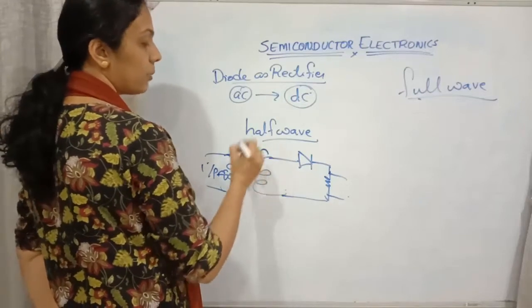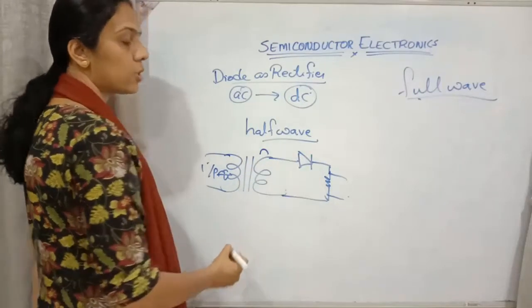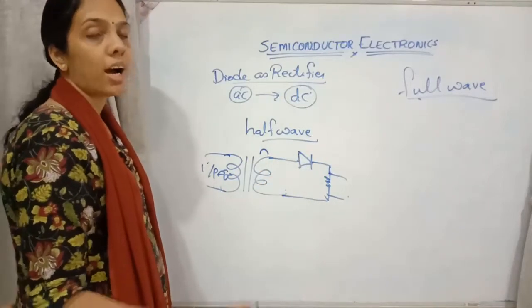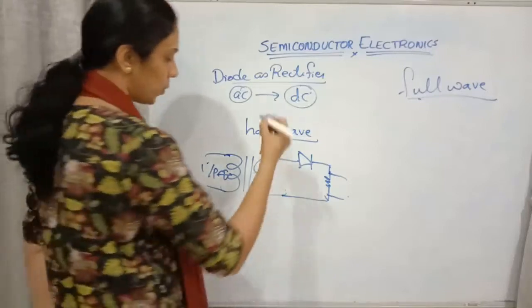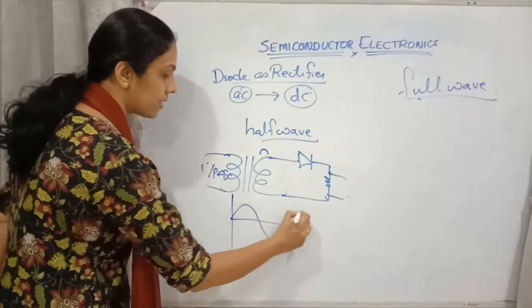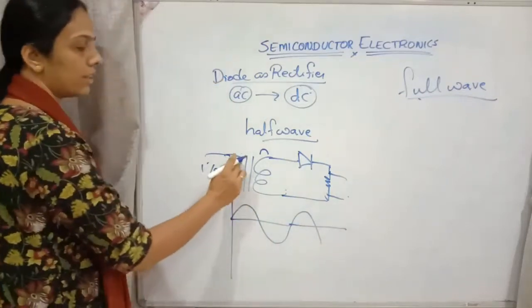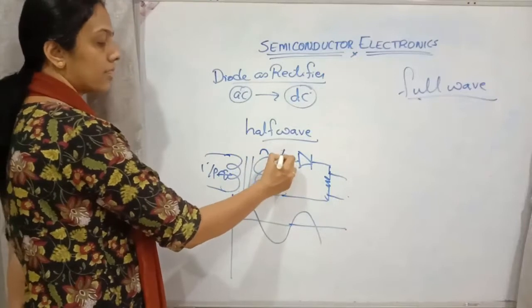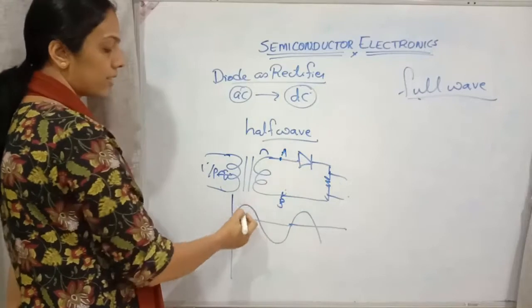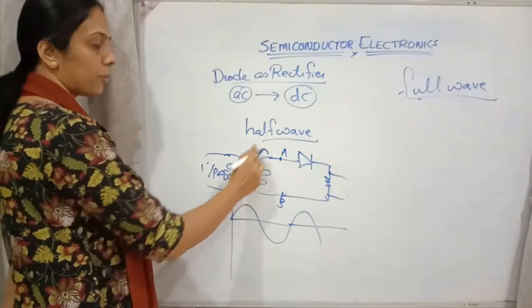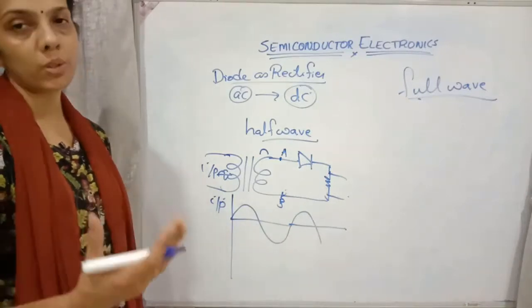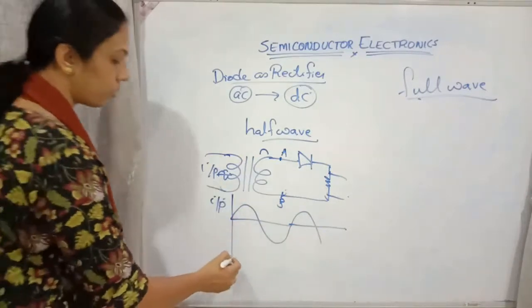When we give AC as input, first the positive half cycle comes. When the positive side passes through the PN junction — positive connected to positive — it will be under forward bias. So we will be getting an output voltage. If we draw the input diagram, at point A and point B, when the positive half of the cycle comes to the PN junction it is under forward bias, so we get an output.